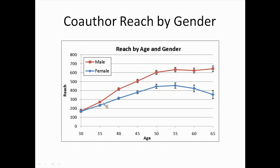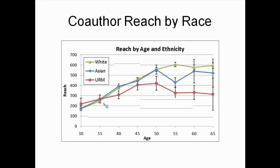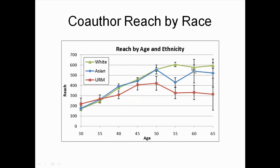One of the things we noticed — a big part of the grant proposal — is that people have known about this stuff for many decades, but no one has really done anything computationally. What we saw was that when you look at men and women, they start out the same. Up to about age 35 they have similar networks, and then as they get older you start seeing this divergence — men develop bigger network reach than women.